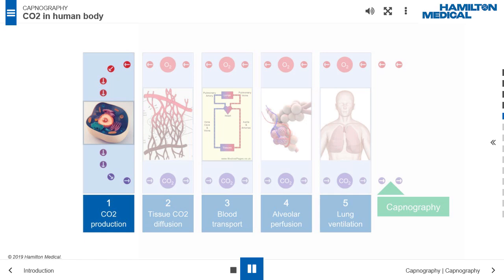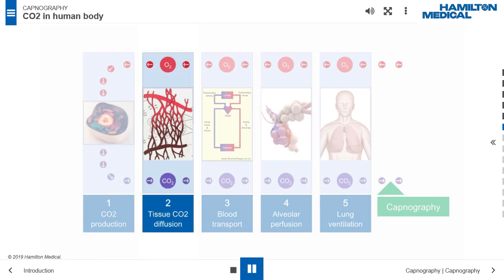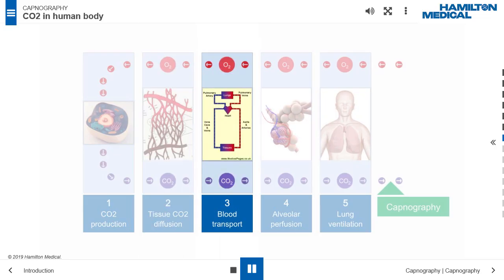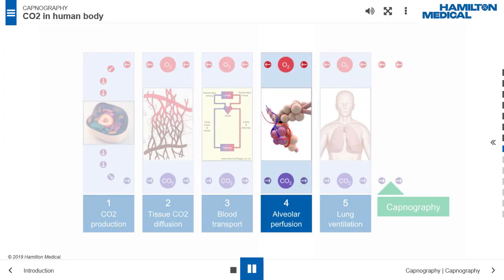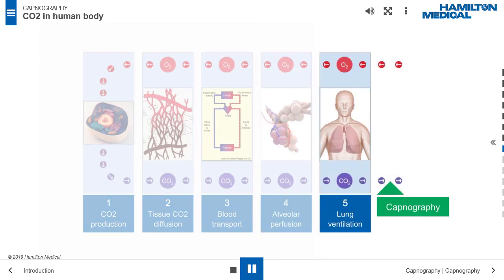CO2 is produced by the cellular metabolism. CO2 diffuses into local capillaries and then the venous system. CO2 is transported in the blood to the lungs. CO2 diffuses from the capillary blood into the alveoli. CO2 is expired through lung ventilation.